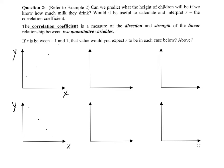Here we have variables x and y, and these are their observations. If I was to put a line on this graph, it would perfectly touch all those points — so this is perfectly linear. It's a strong positive linear relationship. In this case, r would be positive 1.